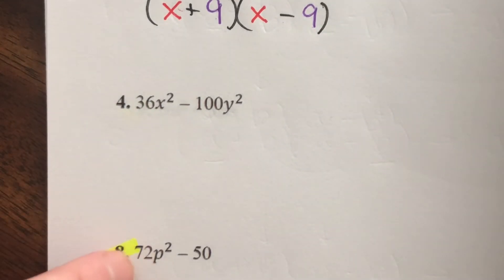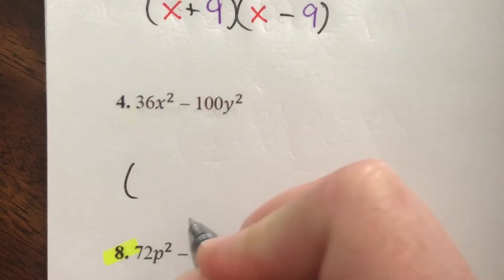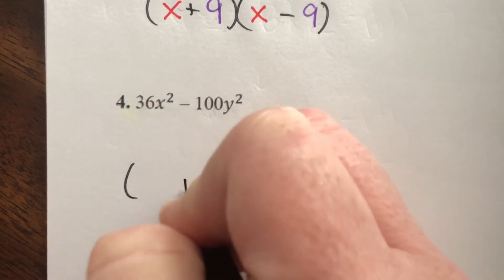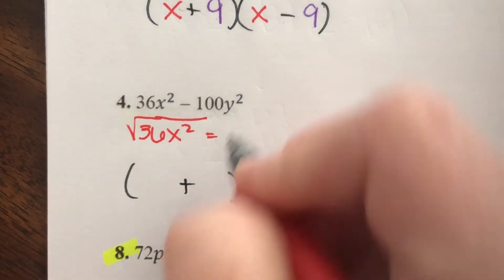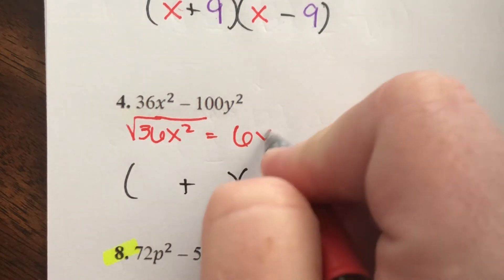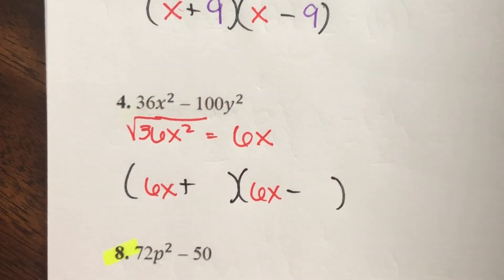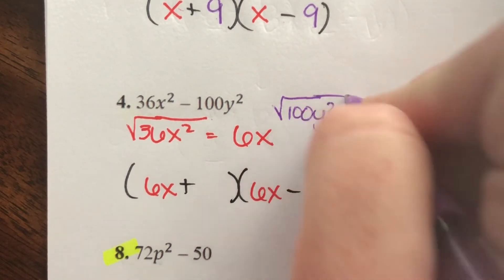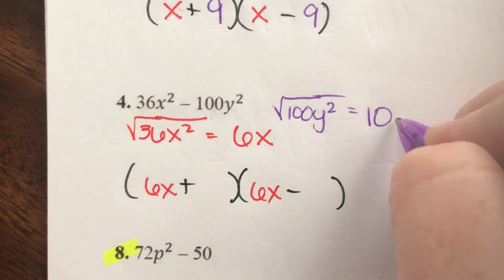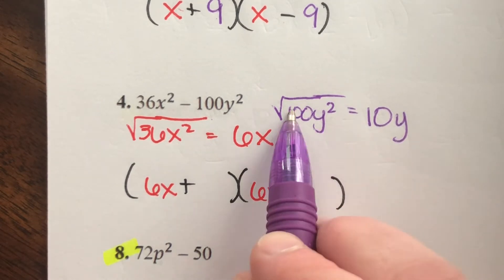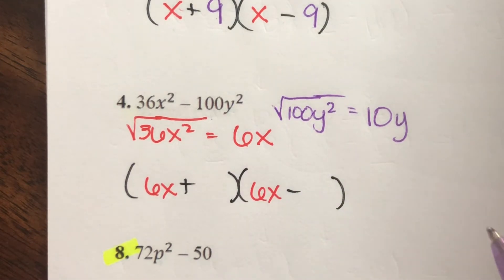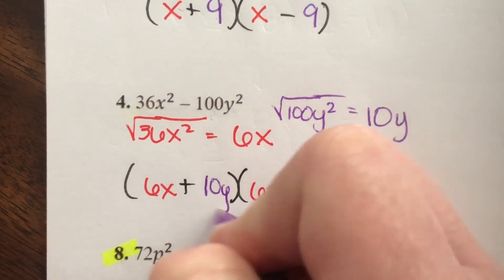36x² minus 100y² — those are both perfect squares. Square root of 36x²: square root of 36 is 6, square root of x² is x, so 6x. For the second term, 100y²: square root of 100 is 10, square root of y² is y — so 10y. Our answer is (6x+10y)(6x-10y).